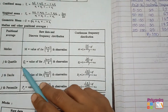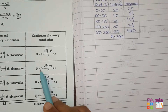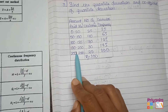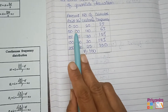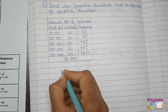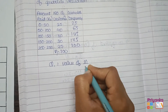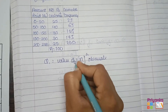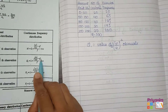For continuous frequency distribution, we use the big formula. Note: if the continuous frequency distribution is in exclusive form, take the lower limit L directly; if inclusive, subtract 0.5. Also remember: for continuous frequency distribution, do NOT add 1 to N.